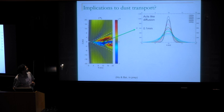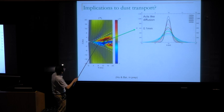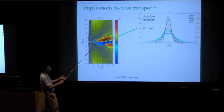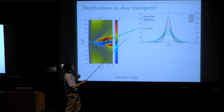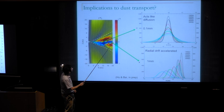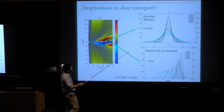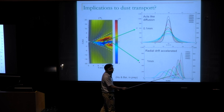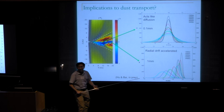This complex flow structure may have implications for dust transport. In the region where the upper half carries dust outward and the lower half carries it inward, this acts roughly like diffusion, giving a little extra diffusion. But in another region, dust spends more time near the mid-plane, giving accelerated radial drift. The dashed line shows dust evolution without accounting for this complex flow; taking it into account gives a much faster drift.